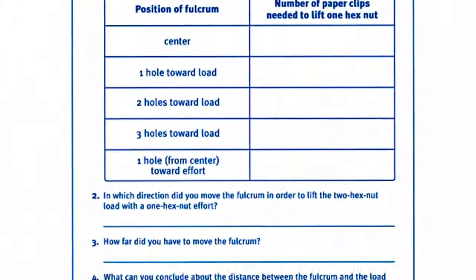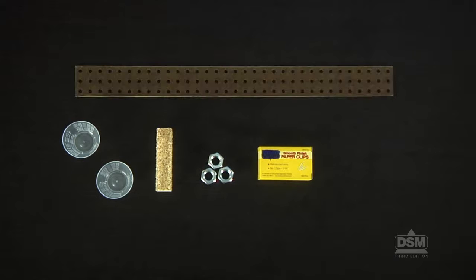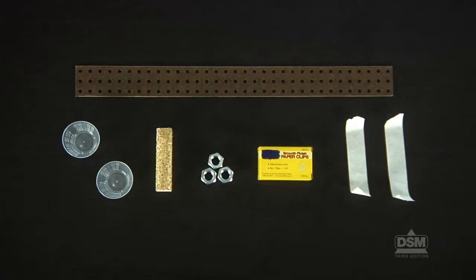To prepare for the activity, make a copy of Activity Sheet 2 for each student. Each team of four will need two plastic cups, one fulcrum, three hex nuts, 60 paper clips, one pegboard beam, and two pieces of masking tape about four inches long each.